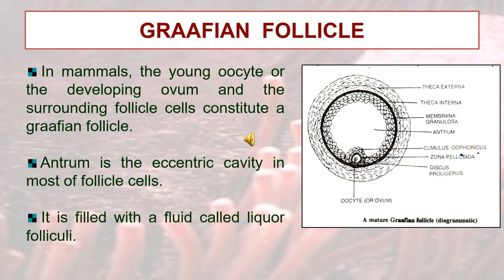Graafian follicles: In mammals, the young oocyte or developing ovum and the surrounding follicle cells constitute a Graafian follicle. The antrum is an eccentric cavity in the mass of follicle cells. It is filled with a fluid called liquor folliculi. This is the figure of a mature Graafian follicle.